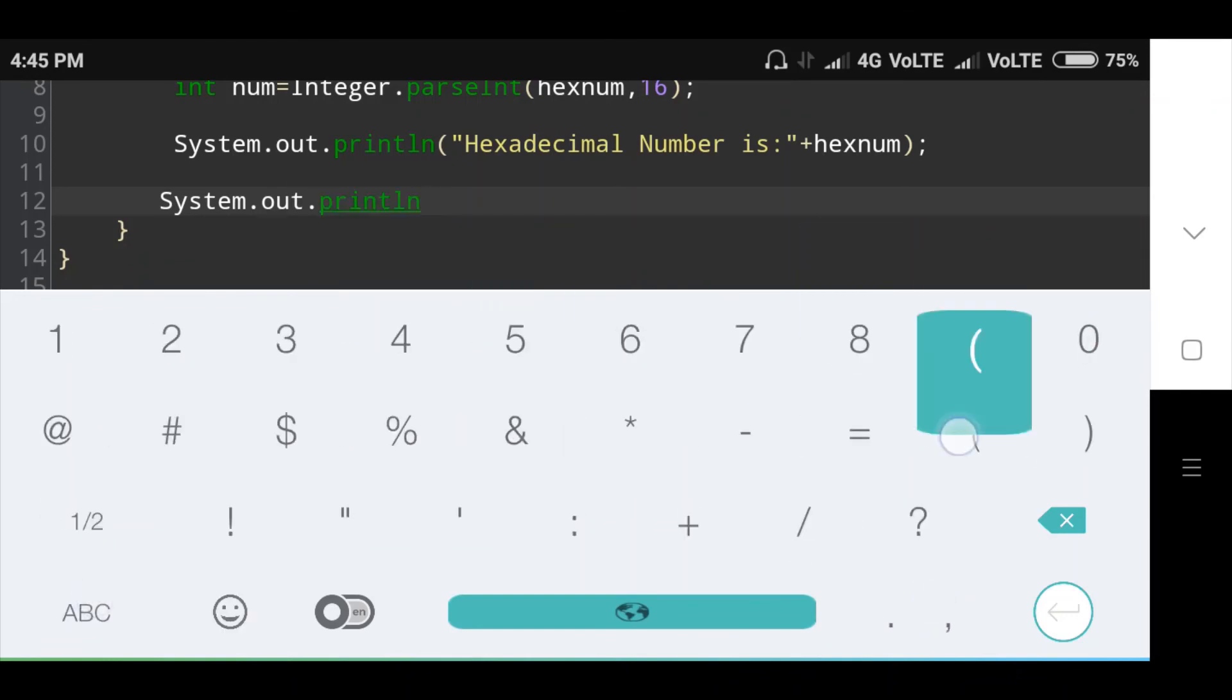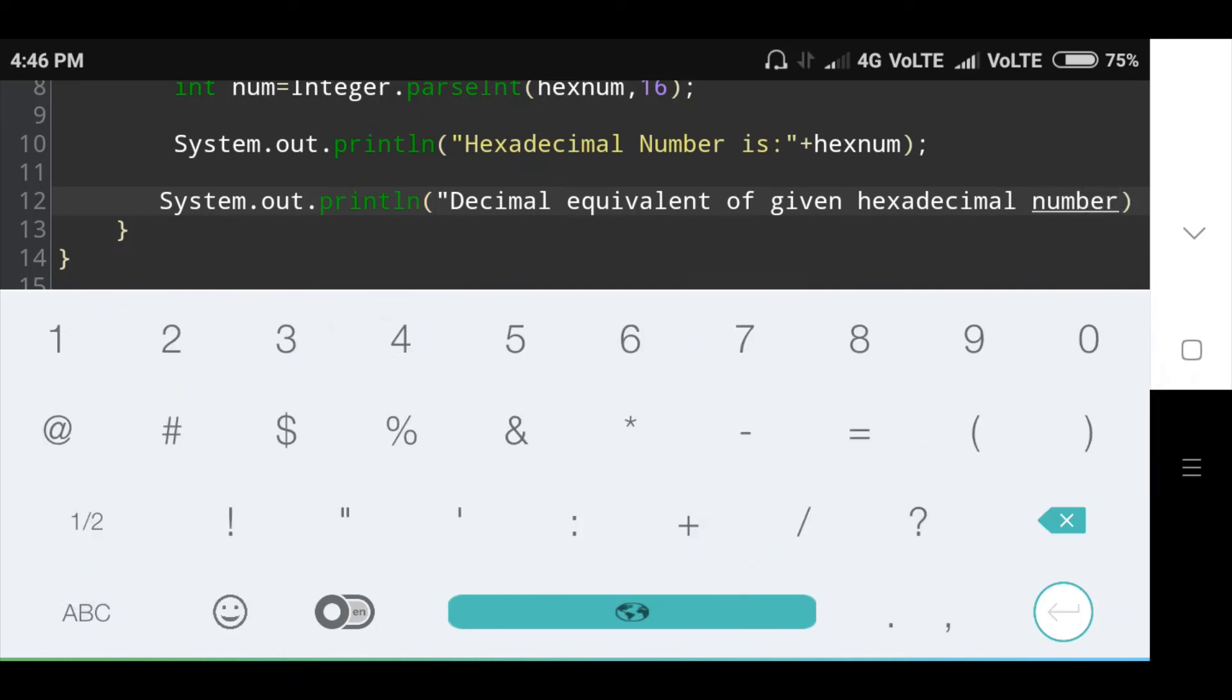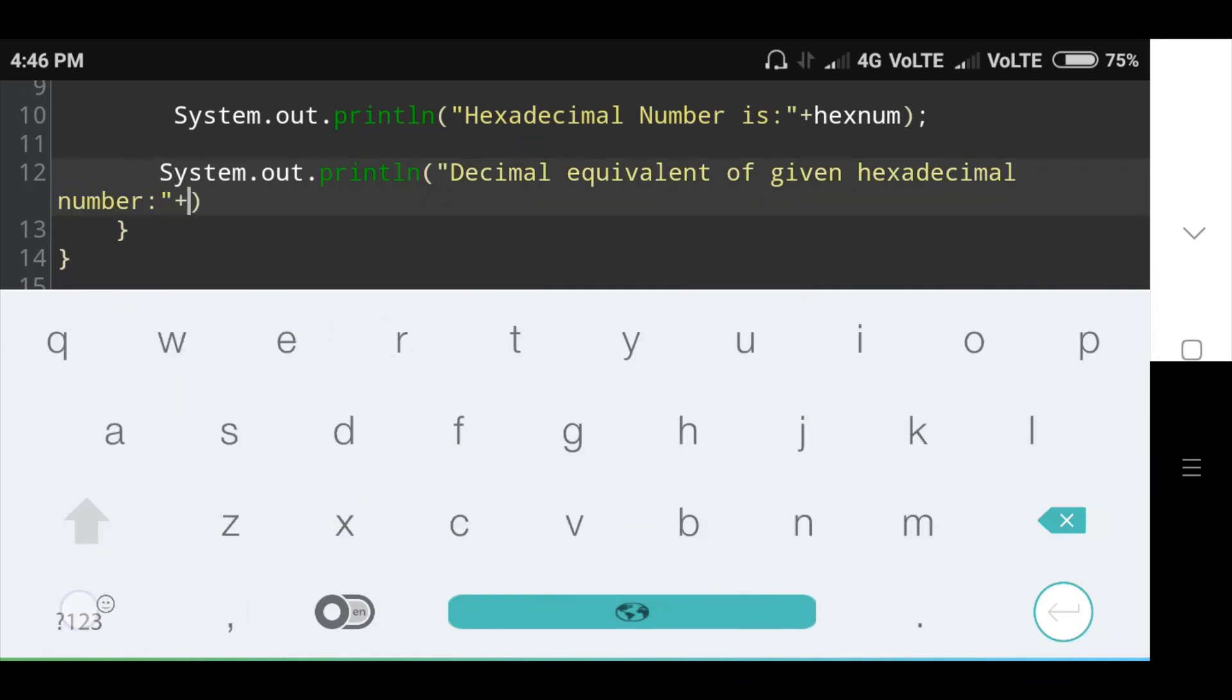Second message: System.out.println("Decimal equivalent of given hexadecimal number: " plus num). Here the number value is printed.